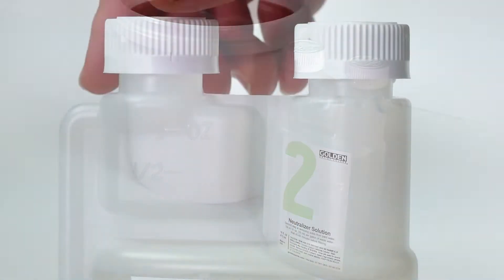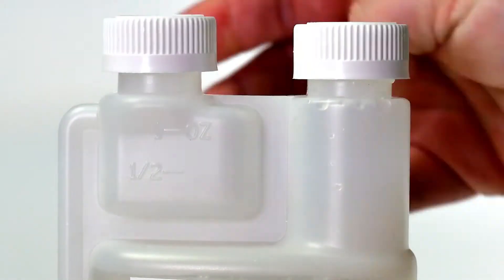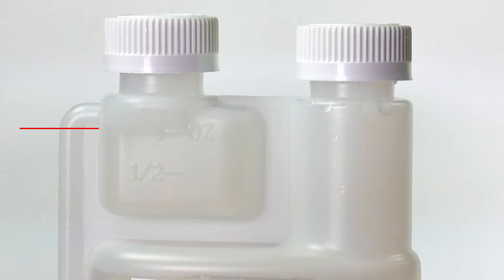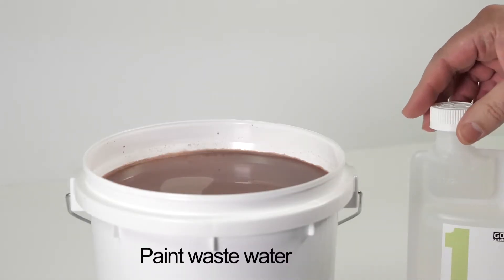Take solution one and loosen the left lid on the side with the small measuring reservoir. Squeeze the bottom of the bottle to measure one ounce of solution into the reservoir. Fully remove the lid and pour the measured amount into your wastewater.